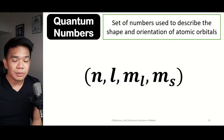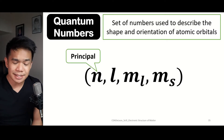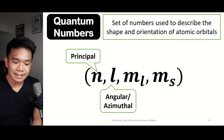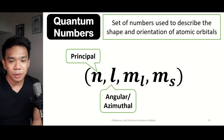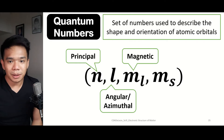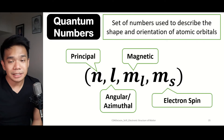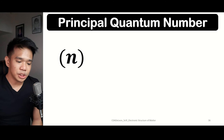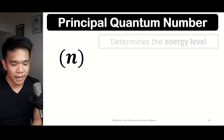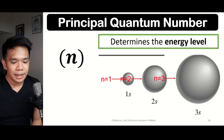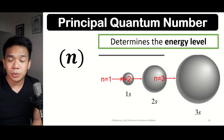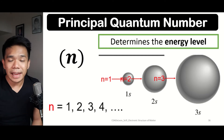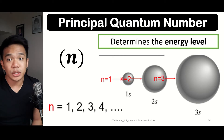Quantum numbers come in four different types: N, L, M sub L, and M sub S, representing the principal quantum number, the angular or azimuthal quantum number, the magnetic quantum number, and the electron-spin quantum number respectively. The principal quantum number N determines the energy level and can be represented by the atomic radius, or the distance from the atom's nucleus to the electron. It can be represented by any whole number starting from 1, 2, 3, 4, and so on.